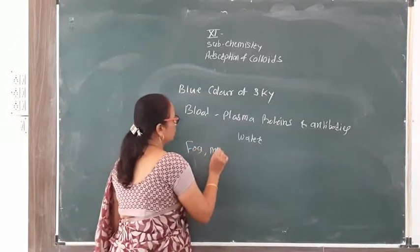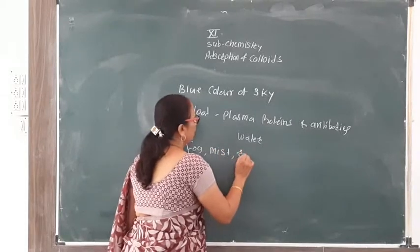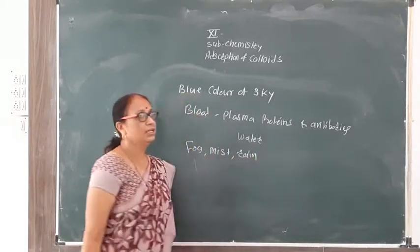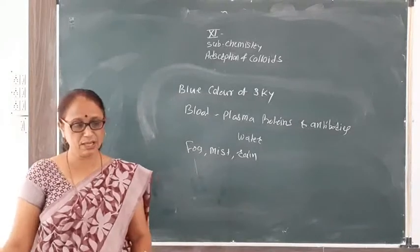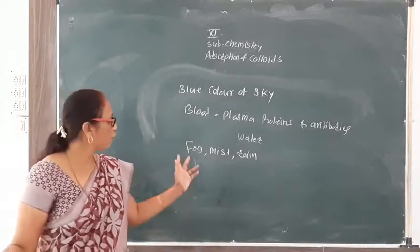Fertile soils are also colloidal in nature. Humus in the soil acts as a protective colloid, and soil absorbs moisture and nourishing material due to its colloidal nature. Fog, mist, and rain are also examples of colloids.